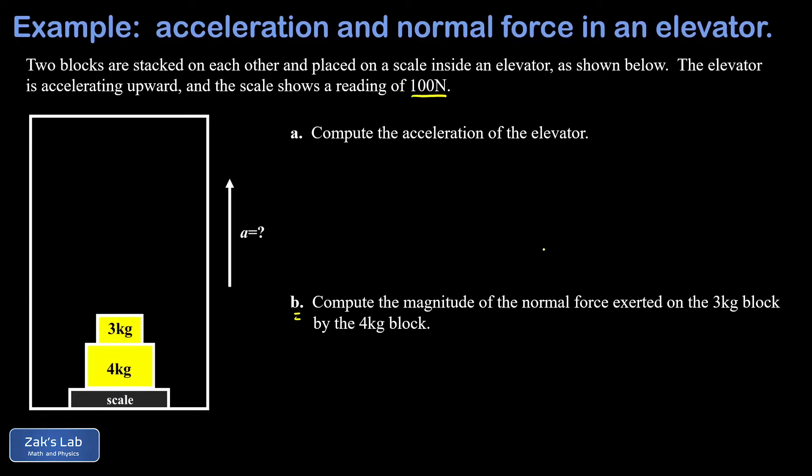So the scale says 100 newtons, and there's two ways to interpret that. I could say these masses are pushing down on the scale with 100 newtons of force, but we know from Newton's third law that the scale must be pushing back on those masses with 100 newtons. So what I'm going to do here is view the entire seven kilograms as a single mass that's being pushed on from below by the scale, and the magnitude of that force is 100 newtons.